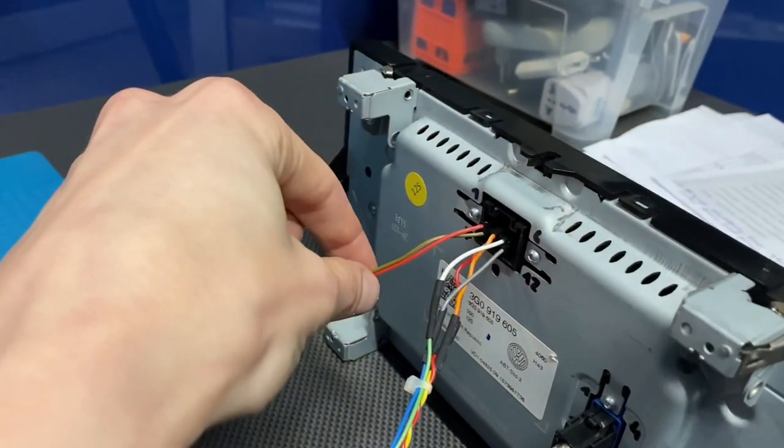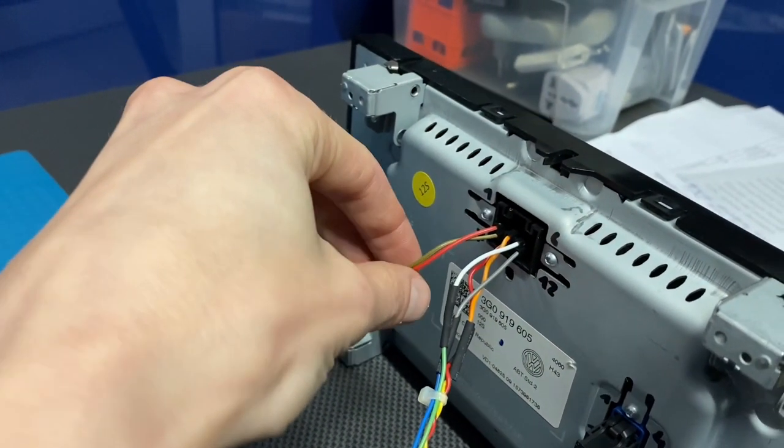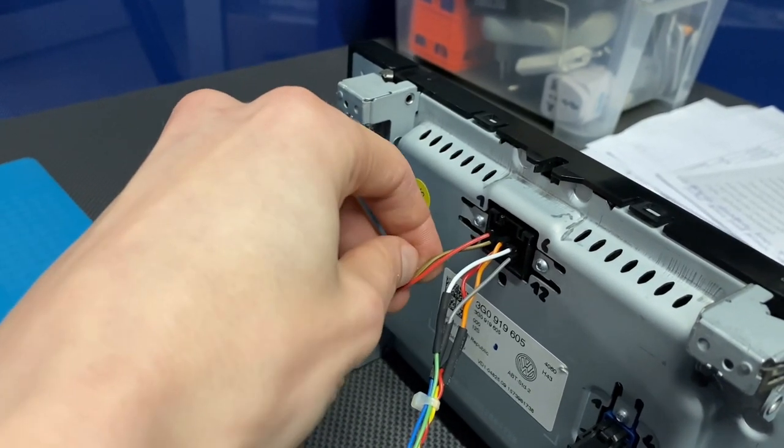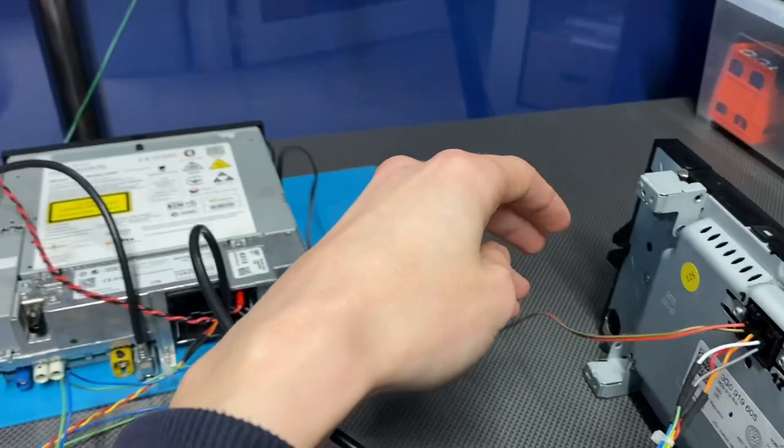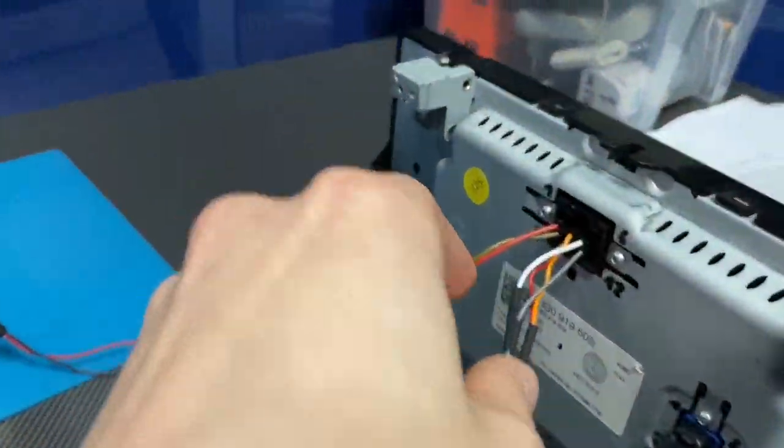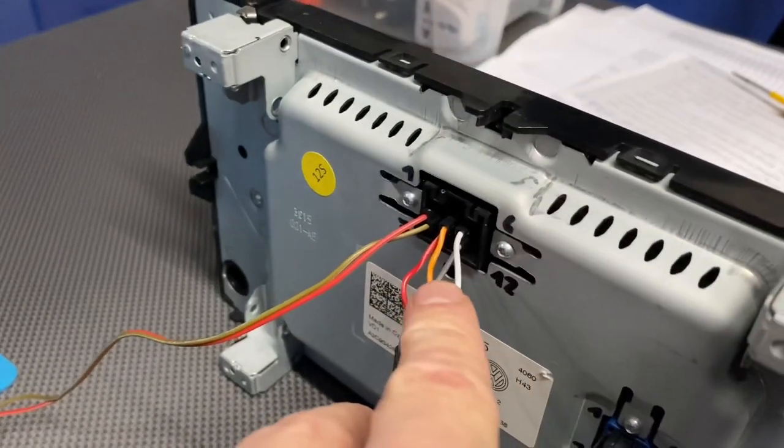And those two, number one and number seven, are the power. So number one is 12 volts, number seven is ground, and this goes here to this 12 volt adapter. And what's next?